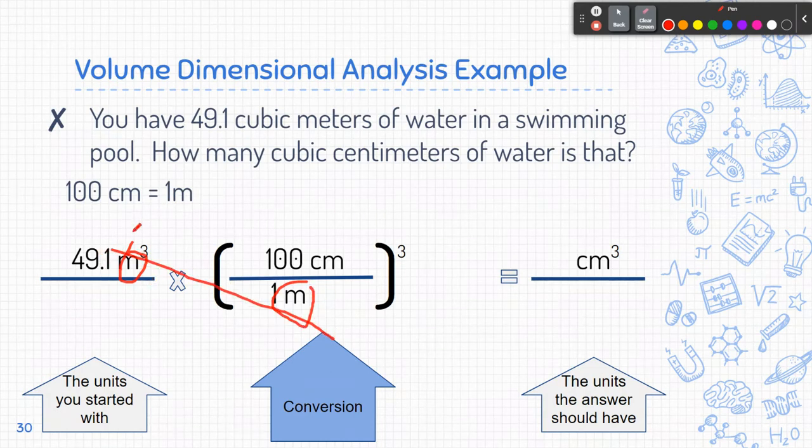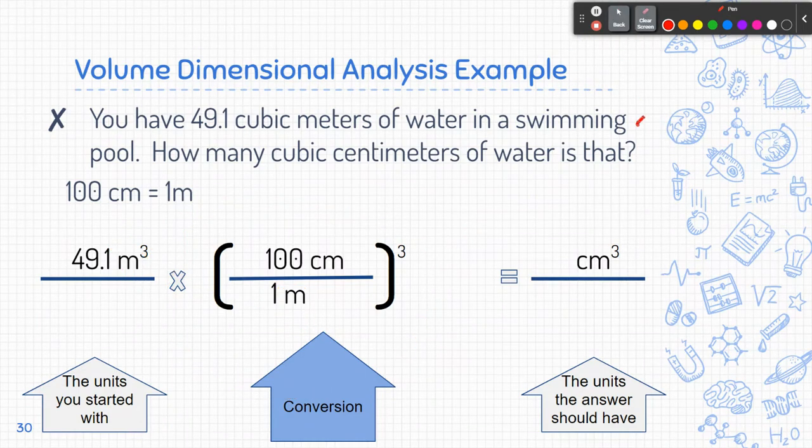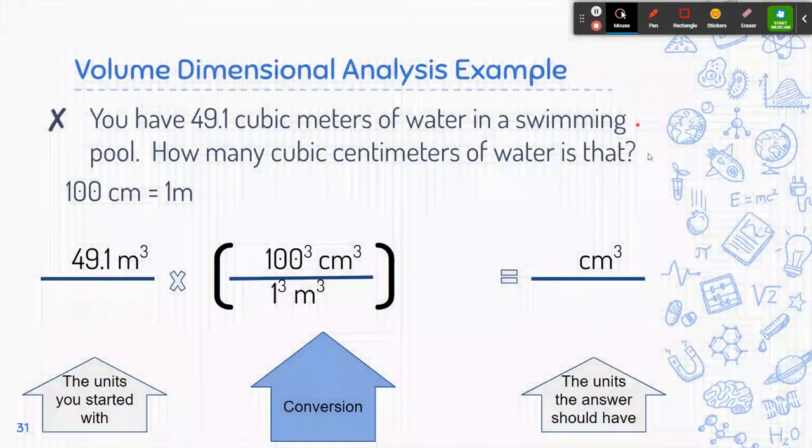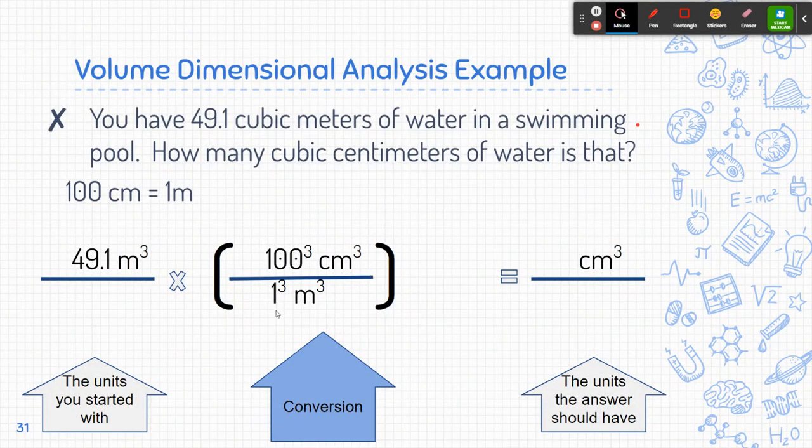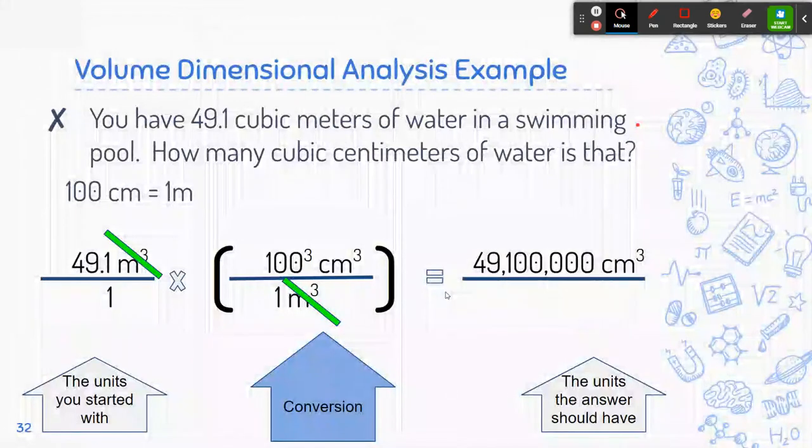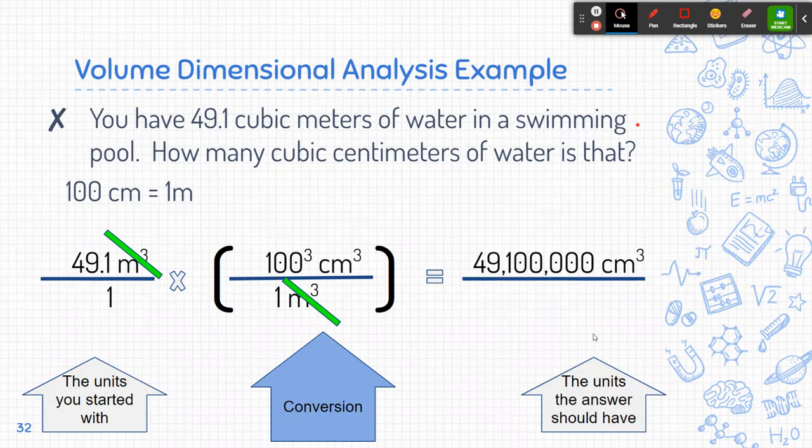But because it's just meters over here on the right-hand side, I need the, and this is meters cubed over here, I'm going to cube the whole conversion factor. You cannot just cube part of it. You have to cube the whole thing. Okay, so that means I'm going to get 100 cubed times centimeters cubed and then 1 cubed times meters cubed. So don't forget to cube both the number and the unit. And once I do that, my meters cubed will cancel out. And so my answer is 49,100,000 centimeters cubed.